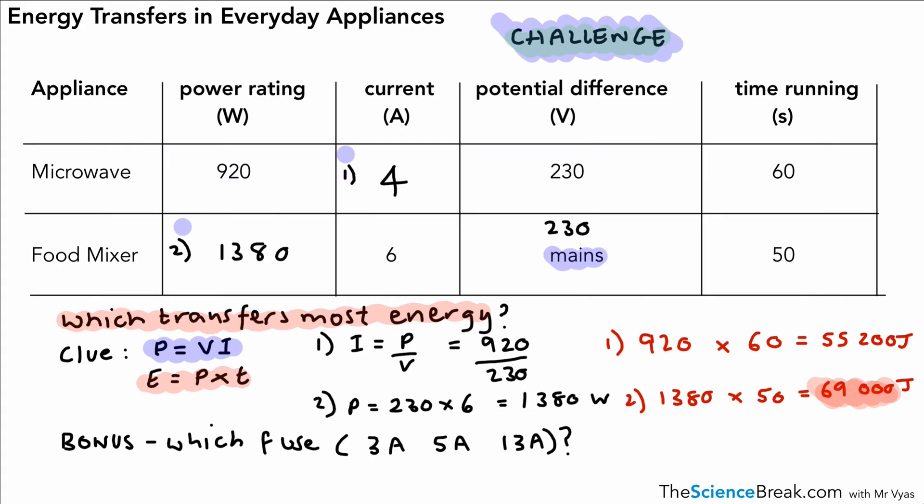Okay, so which fuse would we use for the microwave? Well, the microwave runs off 4 amps. The microwave runs off 4 amps, so if we use the 3 amp fuse, that's going to keep blowing. So we need to use the 5 amp fuse for the microwave. And for the food mixer, we need the 13 amp fuse, because if we use the 5 amp fuse, it will keep blowing at 5 amps. And the food mixer runs off higher than 5 amps.